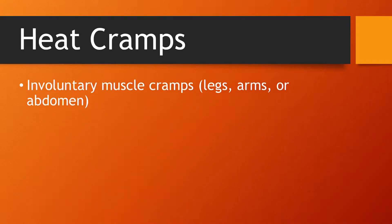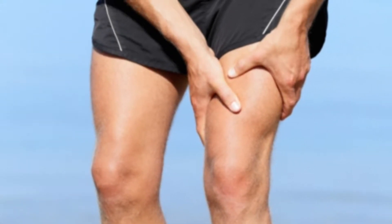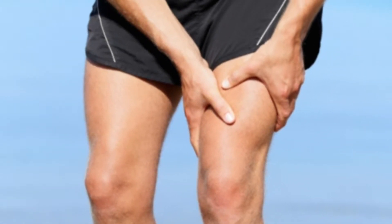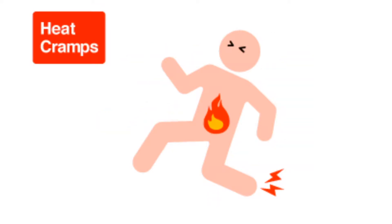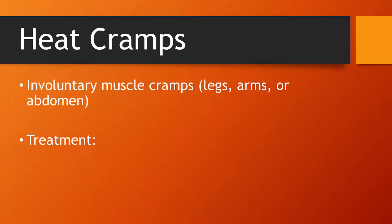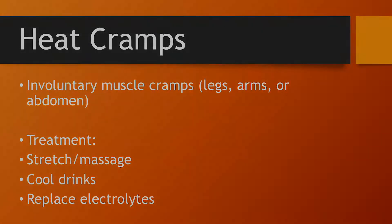Heat cramps are considered one of the more minor heat illnesses and consist of involuntary muscle cramping. They're not necessarily caused by heat alone, but by a combination with dehydration and/or lack of adequate electrolytes in the diet. Treatment can include stretching or massaging the muscle, drinking cold fluids and replacing electrolytes, or ice massaging the area to help reduce severe cramping.